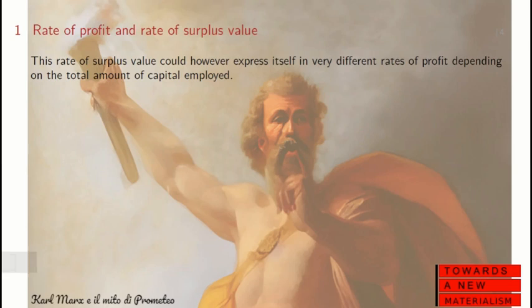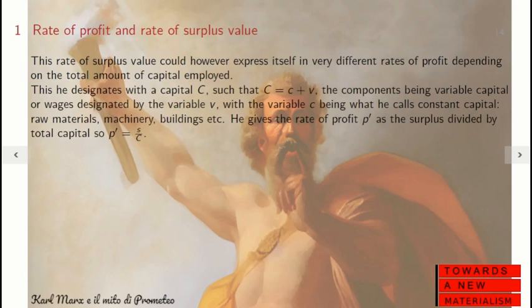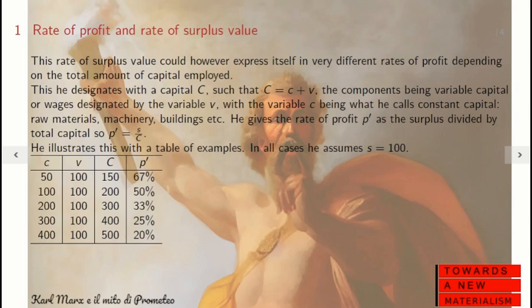The rate of surplus value could, however, express itself in very different profit rates, depending on the total amount of capital employed. He designates this with capital C, such that C equals small c for constant capital plus variable capital V. Variable capital denotes wages; constant capital, small c, equals raw materials, buildings, machinery, etc. He gives the rate of profit P' as the surplus divided by the total capital — that is, S over C. He illustrates this with a table of examples where in all cases S is 100.